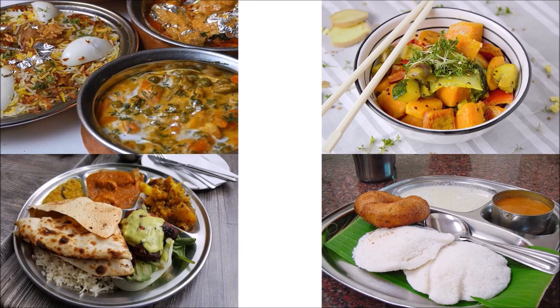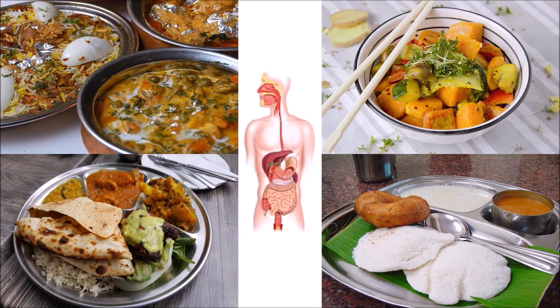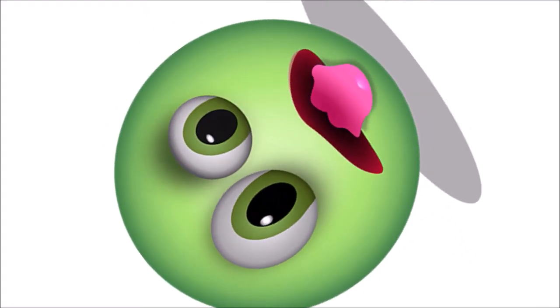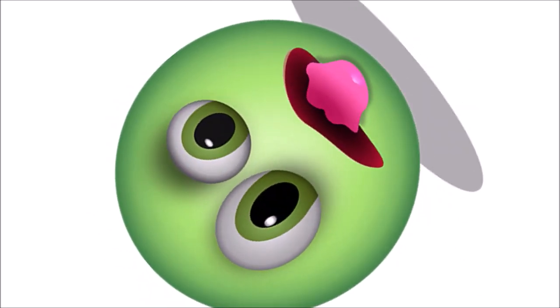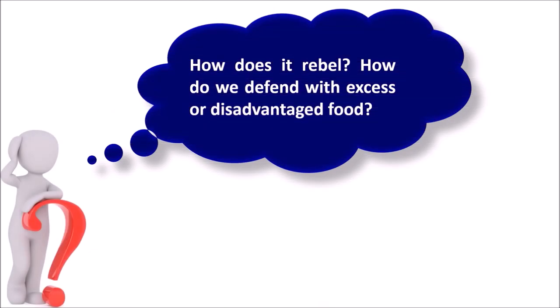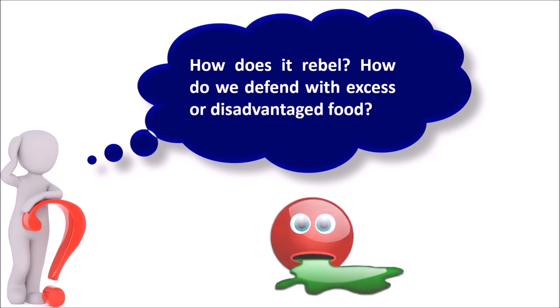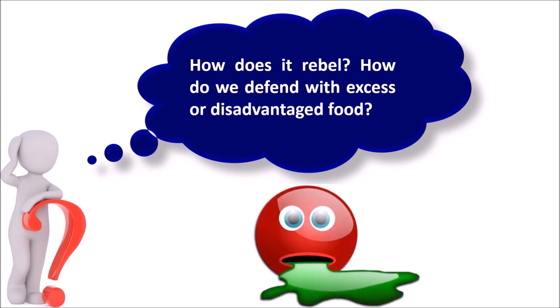We eat varieties of food in our daily life. Our digestive system is well designed to digest all we eat, but sometimes it rebels and we either feel sick or have indigestion problems. How does it rebel? How do we defend against excess or harmful food? We defend with vomiting.